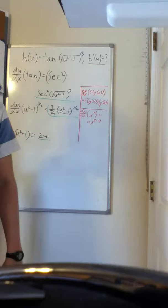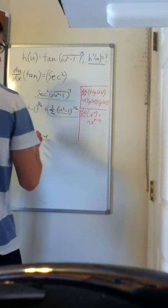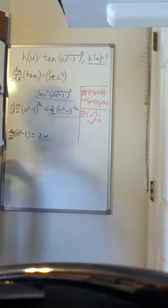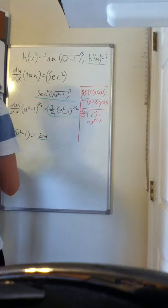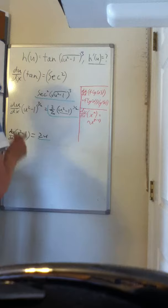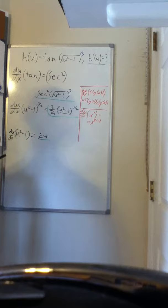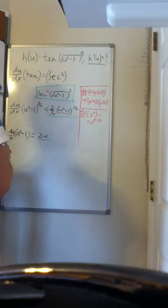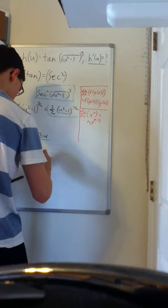And so, since all this is multiplying, let's see what we can simplify. Now this is fairly simple because we have everything multiplying. However, we can't touch anything in the secant. So this is boxed in. Let's go ahead and write that down here. Secant squared of square root of u squared minus one cubed.